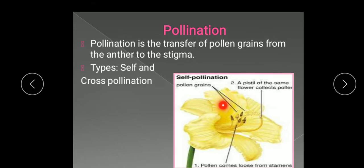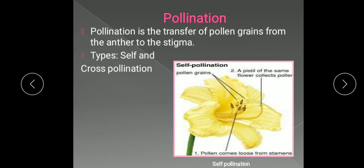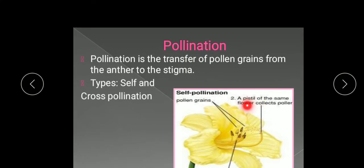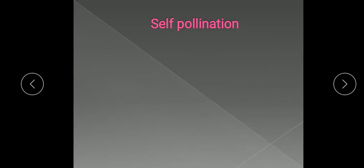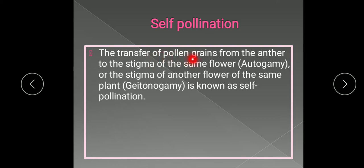In self-pollination, the pollen grains are transferred from the anther to the stigma of the same flower — this phenomenon is known as autogamy. It may also happen that pollen grains from the anther are transferred to the stigma of another flower on the same plant, and this phenomenon is known as geitonogamy.